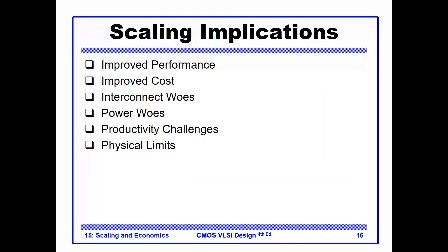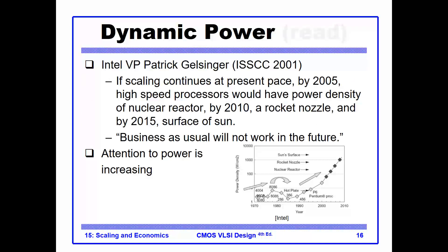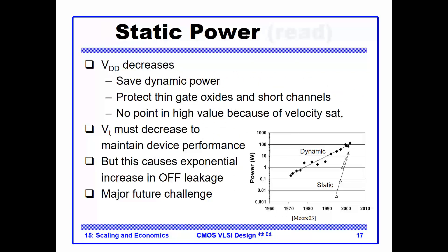Scaling does improve performance and cost, but we have real challenges for interconnect and power. Global wire scaling does not give us good news. Power is going up and power density is reaching physical limits. While dynamic power is increasing, static power is increasing at a faster rate — this includes subthreshold leakage power and gate leakage power. These are very hard to control and technology must develop techniques to reduce them before they become dominant in chip power.